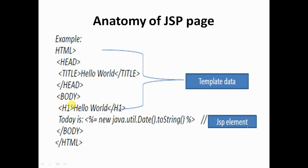In the diagram, the template data goes from the head element to the h1 end tag. A JSP element is specified like this: the expression part uses the percentage-equals syntax. For example, 'new java.util.Date()' which displays today's date. That is an example of the anatomy of a JSP.